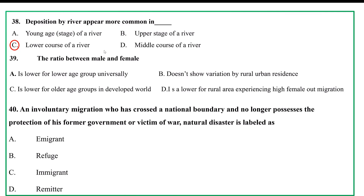The sex ratio between male and female: A. is lower for lower age group universally and does not show variation by rural or urban residence. C. is lower for older age group in the world. D. is lower for rural areas experiencing high female out-migration.